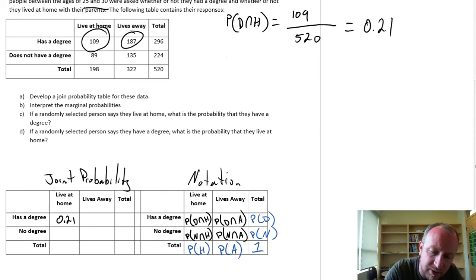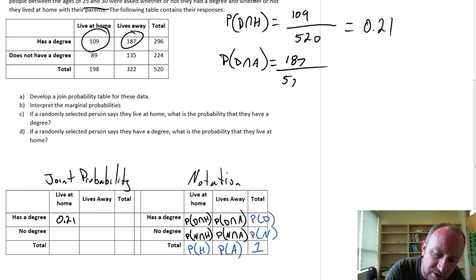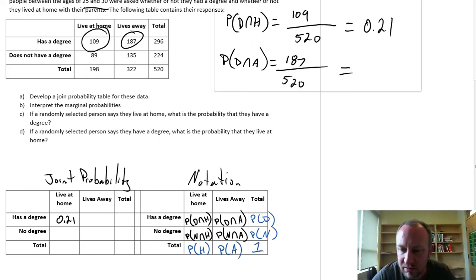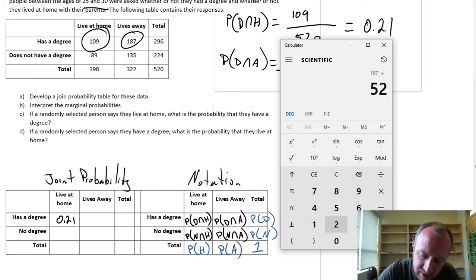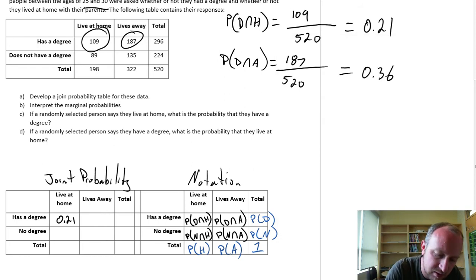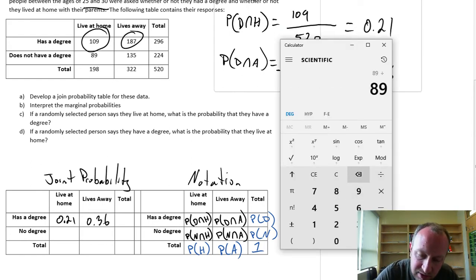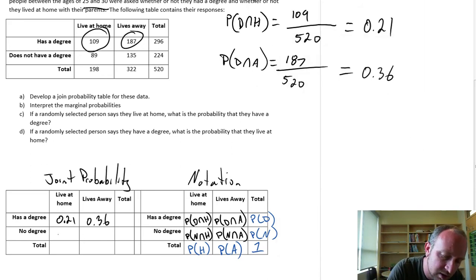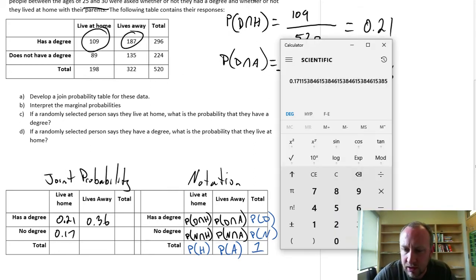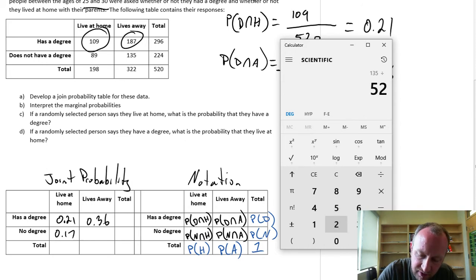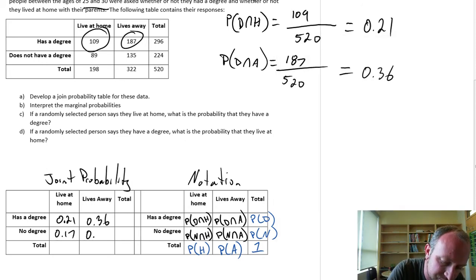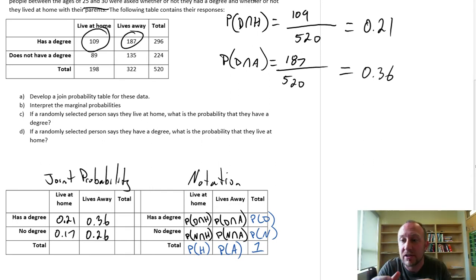Moving on, the probability of having a degree and living away from home: 187 people out of 520, which rounds to 0.36. For no degree and lives at home: 89 out of 520 gives 0.17. And finally, 135 people don't have a degree but live away from home, out of 520, giving 0.26. Those are all of the joint intersection probabilities.